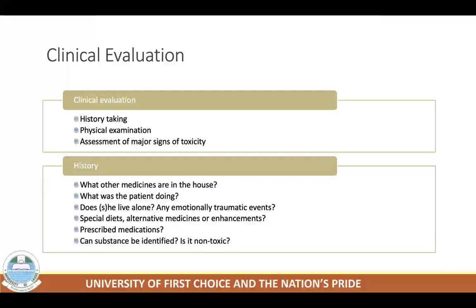When poisoning or drug overdose is suspected, the primary goal of history-taking is identifying the toxic agent. Sometimes the diagnosis is easy — for example, a toddler who ingested iron tablets in the mother's presence. Sometimes it is difficult — for example, a patient hiding drug abuse who has an unexpected seizure. Prior medical or psychiatric history, current medications, and allergies should be obtained from family or friends if the patient is unconscious or uncooperative.